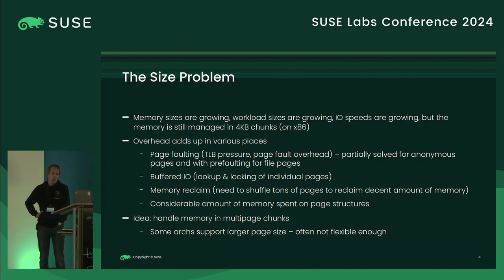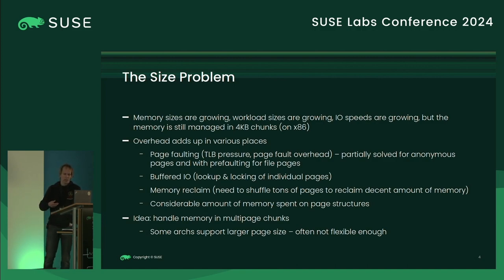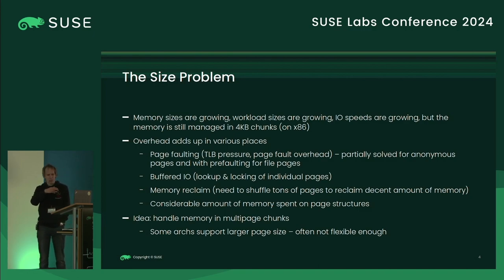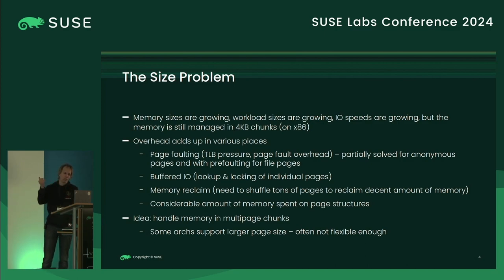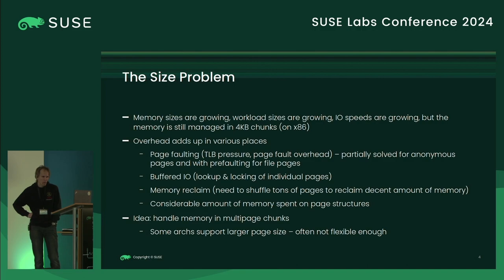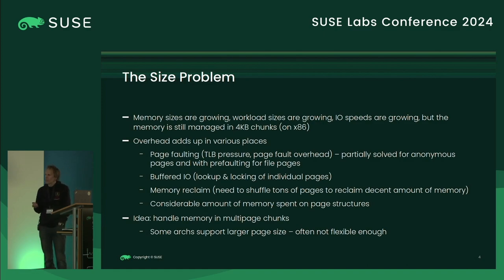Another place where overhead is visible is memory reclaim. As workload sizes grow, more pages flow through the least-recently-used linked list from which we reclaim pages to free up memory. As more and more pages flow through this list, the CPU cost of handling it keeps growing.